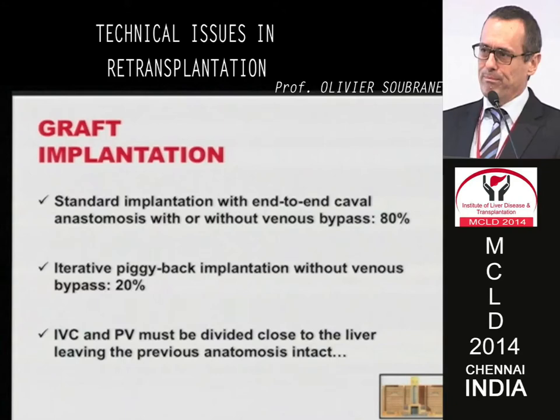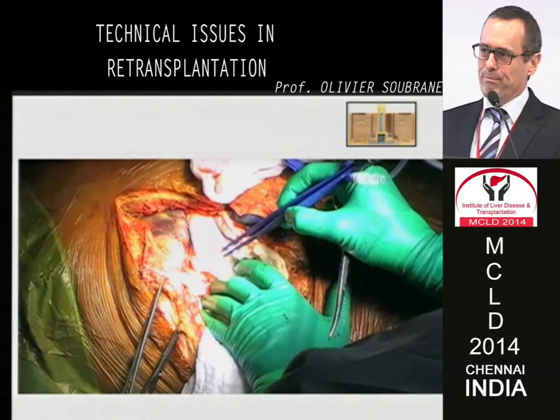Regarding graft implantation, the standard implantation with end-to-end caval anastomosis with or without venous bypass is the major technique, representing almost 80% of re-transplantations. But you can also use an iterative piggyback implantation without venous bypass, sometimes using the porta-caval shunt. The IVC and portal vein must be divided very close to the primary liver graft to leave the previous anastomosis intact, to have enough length of vessels.